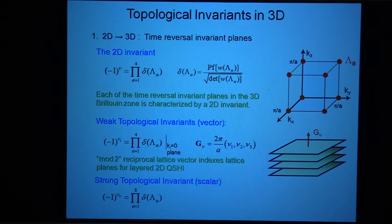So that plane itself has a two-dimensional Z2 invariant. I can think of that as being like a two-dimensional system. The plane KZ equals pi also has a Z2 invariant. So each of these planes has its own Z2 invariant. And by knowing those, you can figure out what all of the four Z2 invariants is.